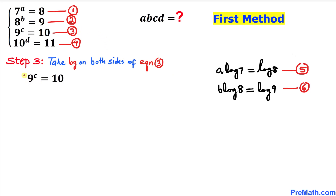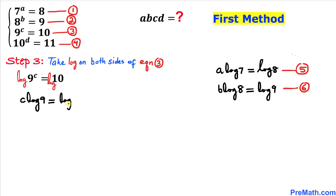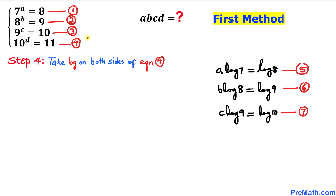Now let's focus on equation three. I've copied it down. Let's take a log on both sides. We can see that we have exponent c — we can bring it all the way to the front. So our equation can be written as: c times log of nine equals to log of ten. Let's call this equation number seven.